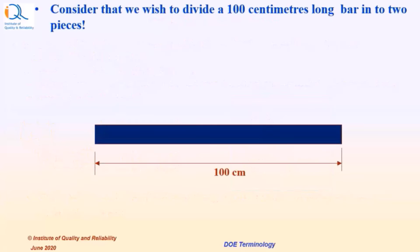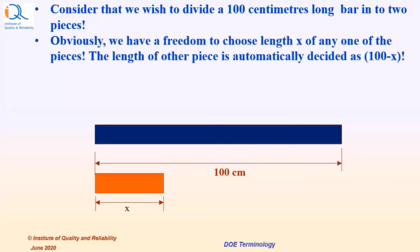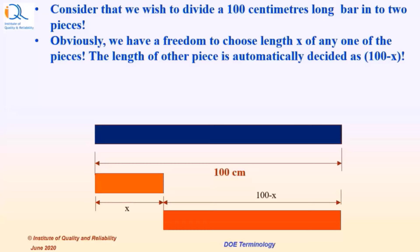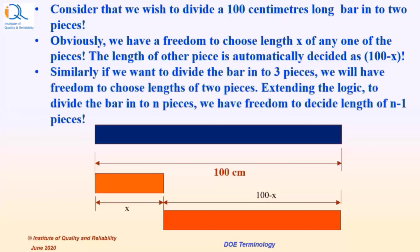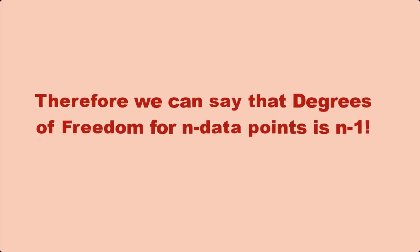Let us see a simple illustration. Consider that we wish to divide a 100 cm long bar into two pieces. We have freedom to choose length x of any one piece; the length of the other piece is automatically decided at 100 minus x. Similarly, if we want to divide the bar into three pieces, we have freedom to choose the length of two pieces. Extending this logic to divide the bar into n pieces, we have freedom to decide n minus 1 pieces. Therefore, degrees of freedom for n data points is n minus 1.